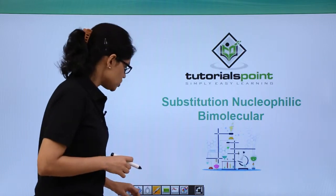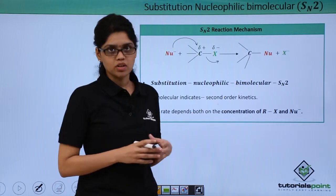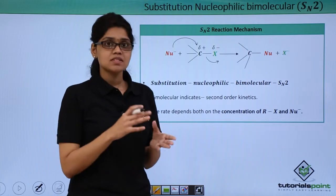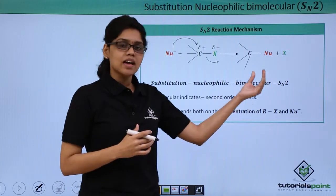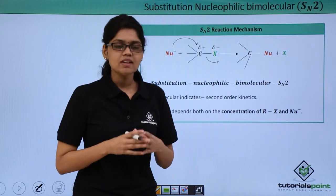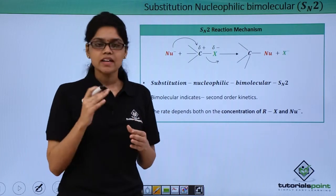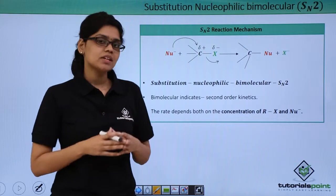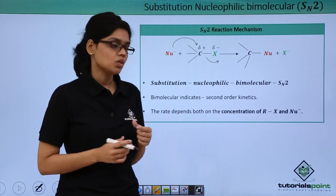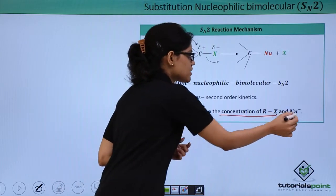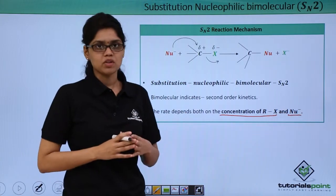SN2 essentially means substitution nucleophilic and bimolecular. Just as we had seen in SN1 where it is unimolecular, SN2 reaction is bimolecular and the reaction rate follows second-order kinetics. The rate-determining step depends both on the concentration of RX and the nucleophile, and hence the RDS is bimolecular.